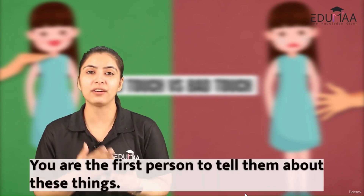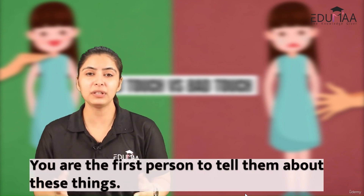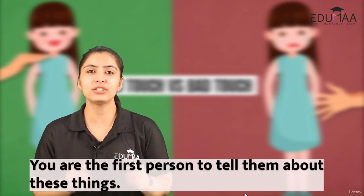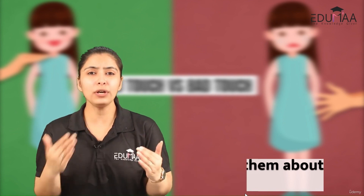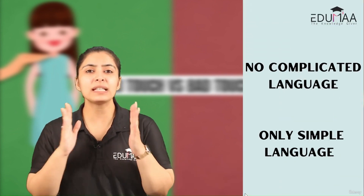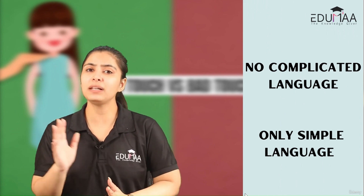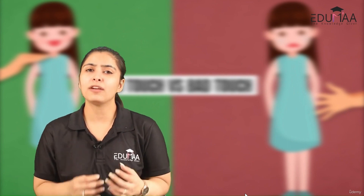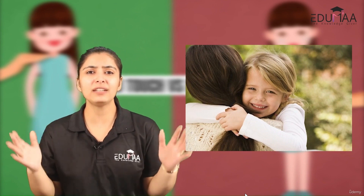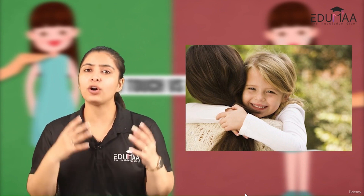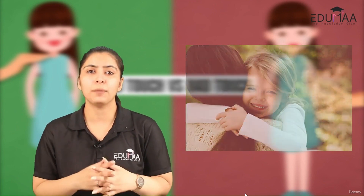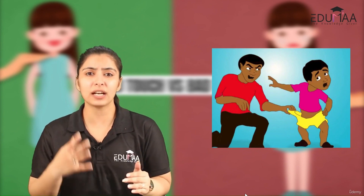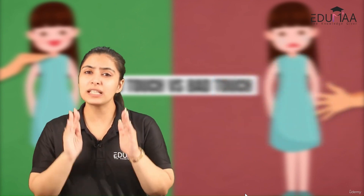You are the first person they can rely on, trust, and feel comfortable sharing their thoughts and feelings with. So you are the first person who should tell them about good touches and bad touches. Don't use complicated language with them — use simple language. For example, when teaching about good touch, tell them that when you feel loved, cared for, and warm with a hug or a touch, that is a good touch. But whenever you feel scared, afraid, or uncomfortable when someone is touching you, that is a bad touch.